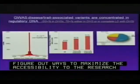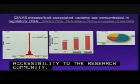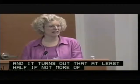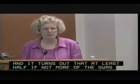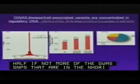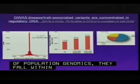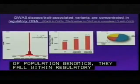I want to close with some exciting recent results on the intersection between GWAS hits and ENCODE. It turns out that at least half, if not more, of the GWAS SNPs in the NHGRI catalog have fallen within regulatory regions — mapped by either DNase hypersensitive sites or transcription factors.